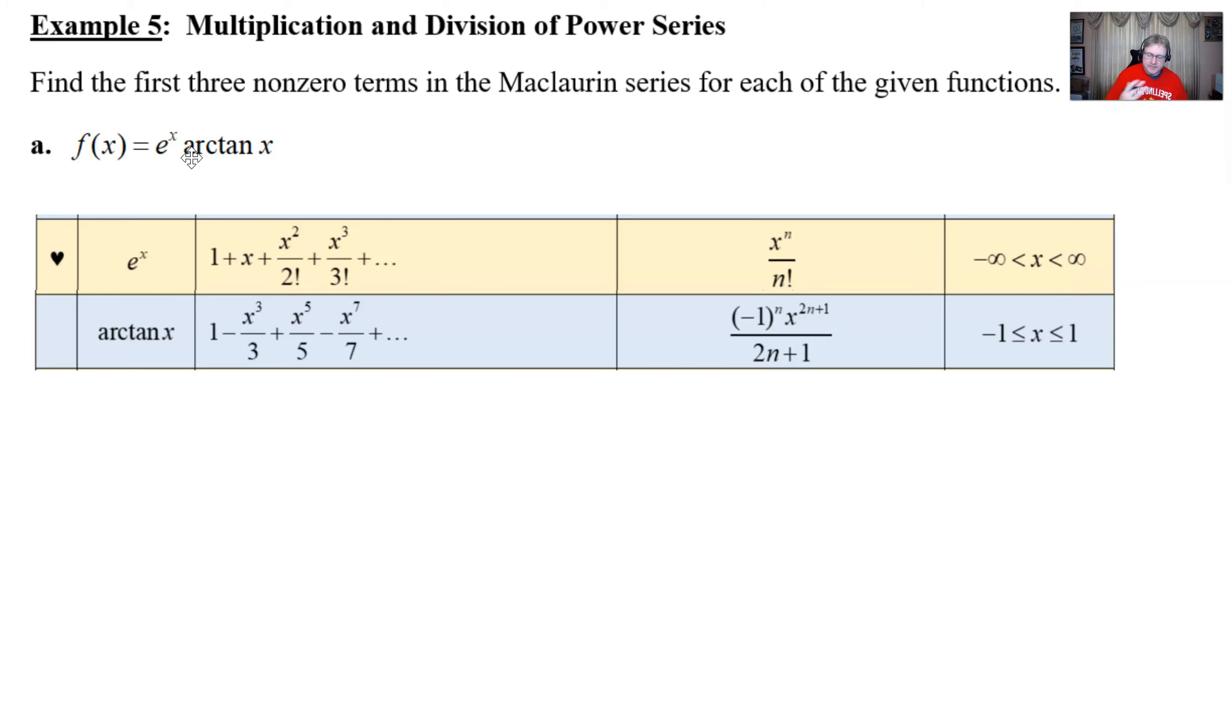And so maybe this problem here isn't so indicative of what you would see on the exam. Maybe you would see combinations of e to the x with sine of x or cosine of x or what have you. But arc tan of x isn't a very tough one to memorize. In fact, it has a lot of characteristics that kind of remind me of the sine of x, except it does not have the factorials in the denominator. So it's not an impossible one to memorize.